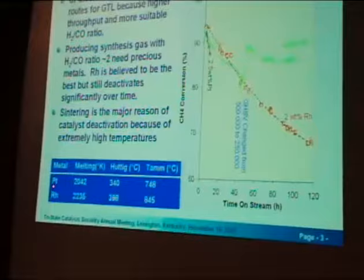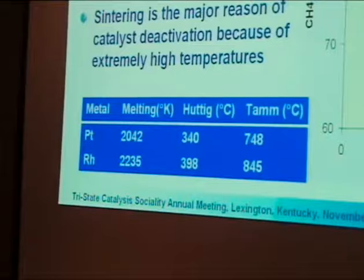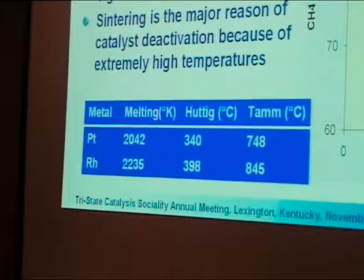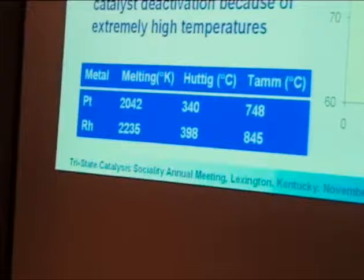If you simply look at the fundamentals — the melting point of platinum and rhodium is around 2,200 Kelvin. The Tammann temperature is around 750°C for platinum and a little bit higher, about 100 degrees higher, for rhodium. But these temperatures are actually lower than the operating temperature — not even talking about the surface temperature. So catalyst sintering is unavoidable.